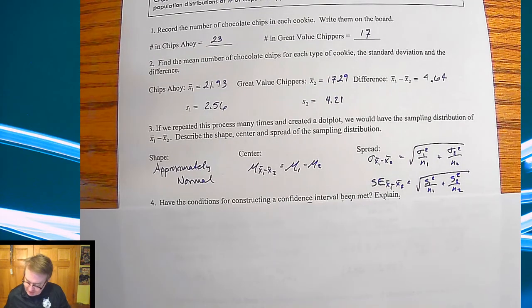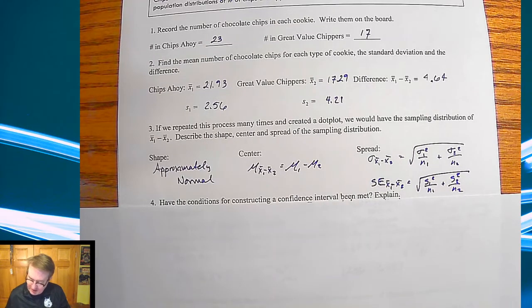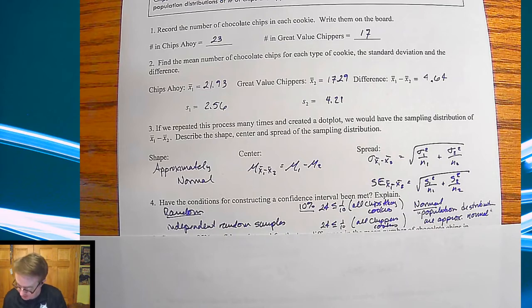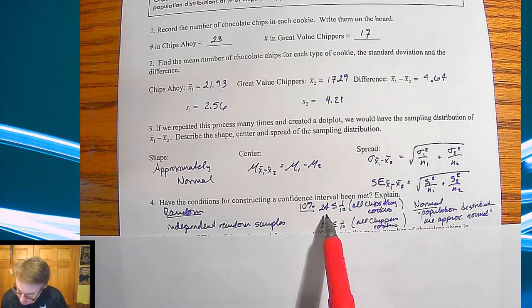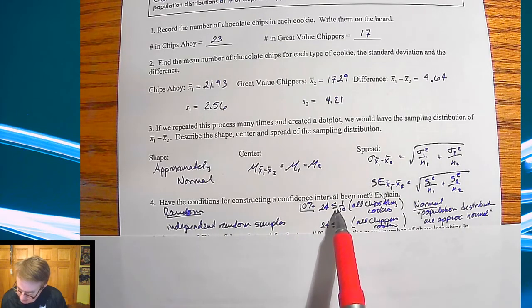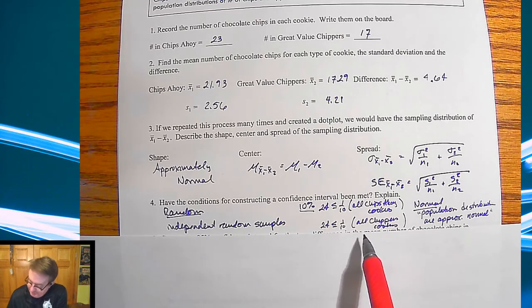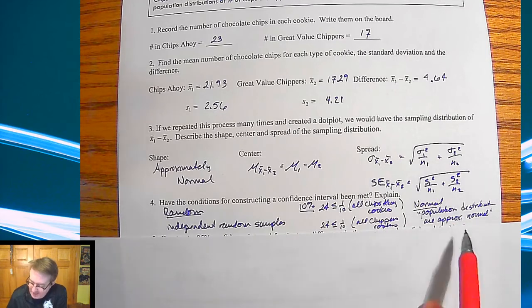So now the next question is, do we have conditions for constructing the confidence intervals? Well, let's take a look. Is it random? Yep. We can assume that's independent random samples, that you picked a random cookie plus the cookies that are in the packages are randomly gotten. Over here, now notice 24 is going to be less than or equal to one-tenth of all Chips Ahoy cookies. And 24 is less than one-tenth of all Chippers cookies.